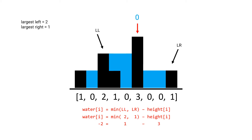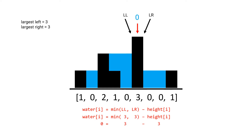There is one minor detail we must account for, which is when the result is negative. For example at the sixth position, the largest left is two and the largest right is one, so the minimum is one. We subtract off the current height of three, leaving a negative result. Obviously a position can't hold negative units of water, so we add a condition that if the formula yields a negative number the units of water is zero. There is also a clever workaround: consider the position itself as a candidate for the largest left and largest right, which prevents negative results.